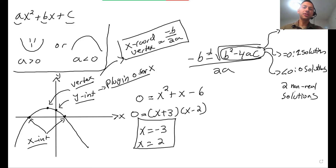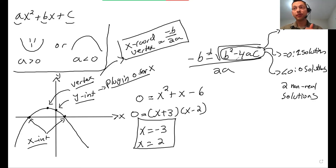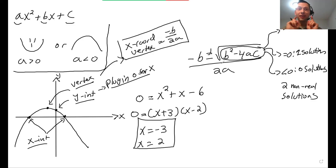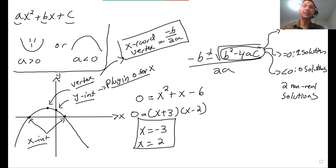So if an SAT question asks how many solutions a quadratic has, all you do is calculate B squared minus 4AC and check whether it's greater than, equal to, or less than zero. That's the fundamentals in a nutshell. Now let's go to actual SAT problems and see how this gets tested.